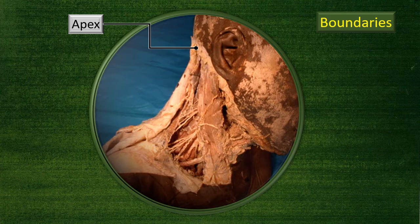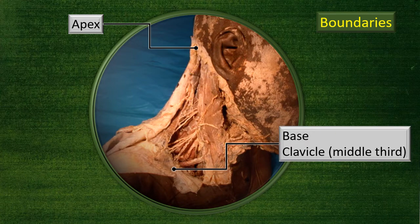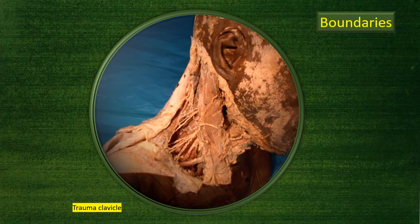The apex of the posterior triangle is at the mastoid process, and posteriorly the superior nuchal line — this is where the sternocleidomastoid and the trapezius meet. The base of the triangle is the clavicle bone, specifically the middle third of the clavicle.